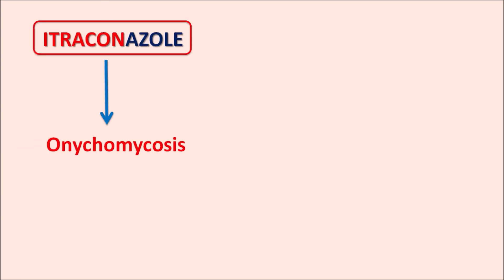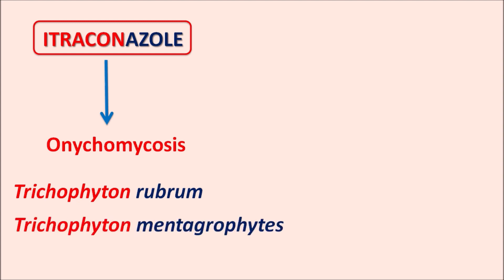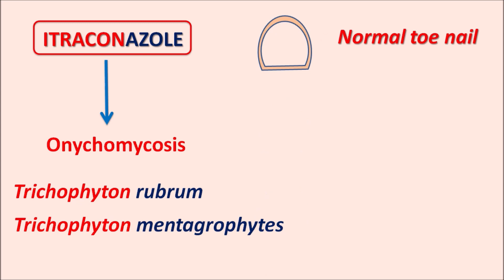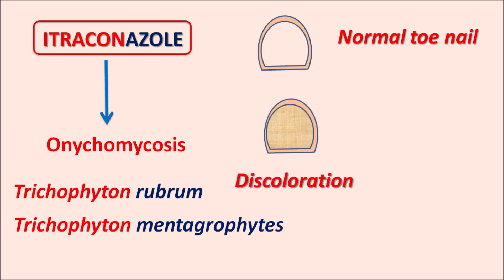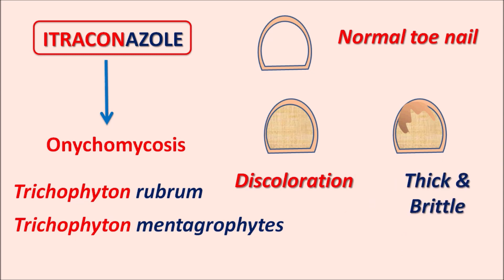Itraconazole is useful in the treatment of onychomycosis. This is a fungal infection that affects the nails, caused by two types of organisms: Trichophyton rubrum or Trichophyton mentagrophytes. These organisms affect the nail resulting in discoloration of the toenail, rupture of the nail bed, or the nail becoming brittle and thick — all due to fungal infection treated by itraconazole.